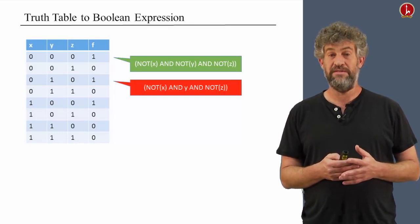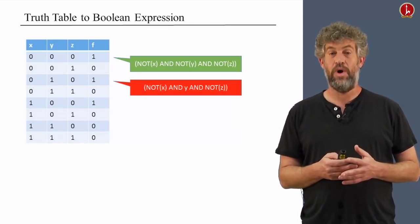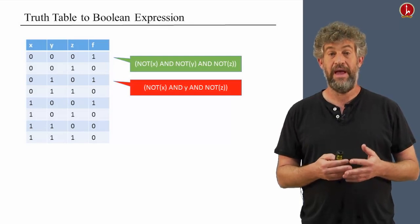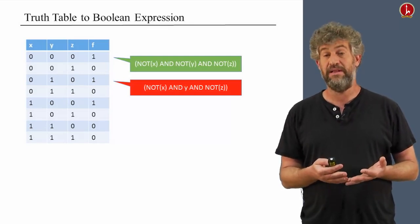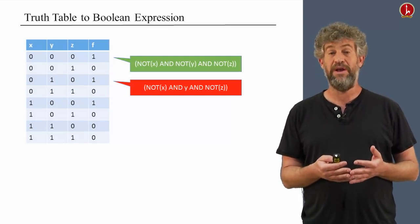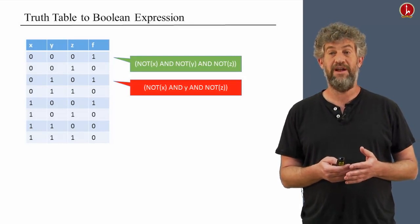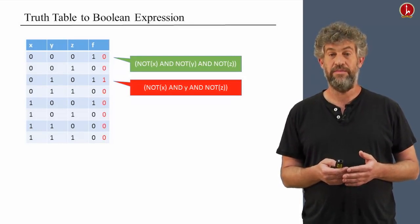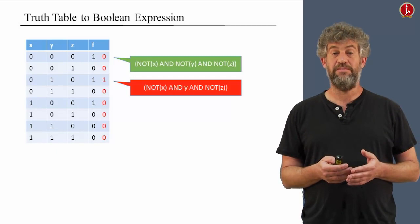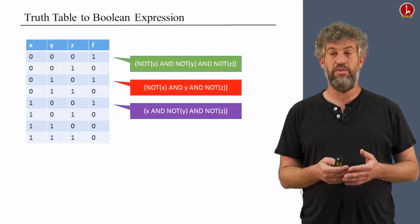So the clause we write here is not x and y and not z. Again, this is something that completely gets a value of 1 only on this row, and gets a value of 0 everywhere else. We do that for every possible row that has a value of 1. Now the purple row.